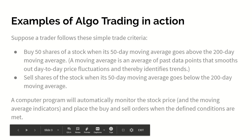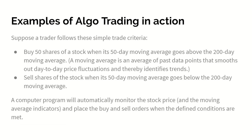Let's talk about some more examples. You can buy 50 shares of a stock when the 50-day moving average goes above the 200-day moving average. Another one would be: sell shares of the stock when the 50-day moving average goes below the 200-day moving average. It's pretty much just a computer program that will automatically monitor these stock prices and do the trading for you. So it's 100% hands-off. You don't have to be sitting there every single day staring at the screen, staring at the charts — these trades will execute for you automatically.